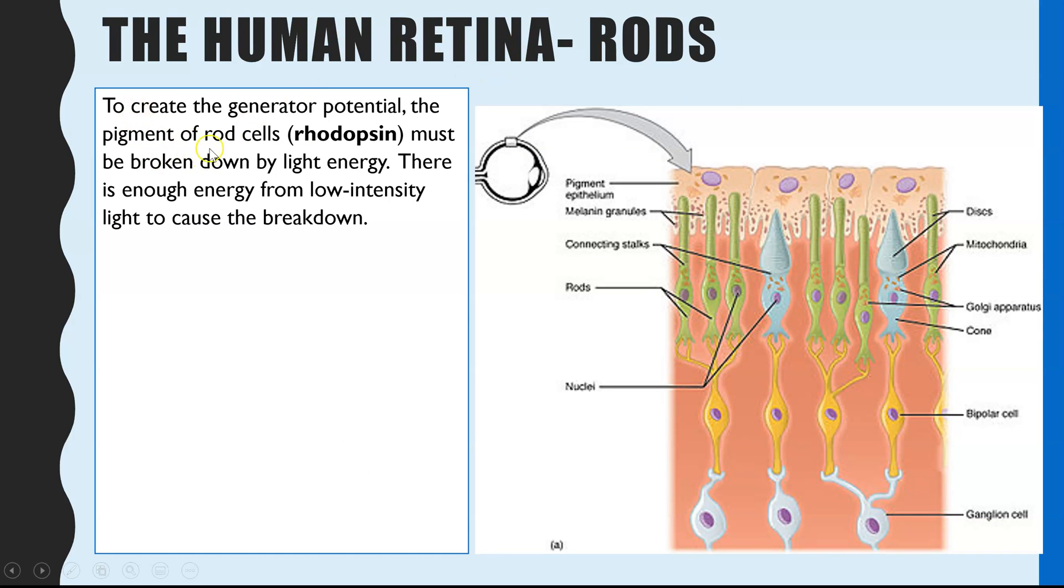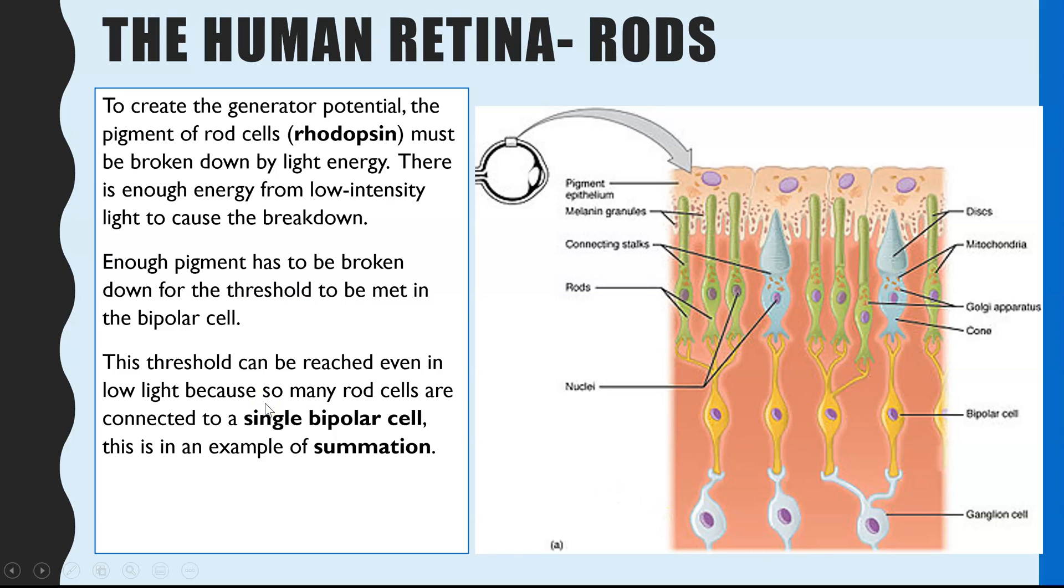So first of all, linking to what we said about receptors, they detect a stimulus. And if the stimulus is big enough, it will create a generator potential or an action potential. And in the case of rod cells, what they will be doing is absorbing the light intensity. And there is a protein pigment inside of these cells called rhodopsin. And if a big enough light intensity is absorbed, it will break down that pigment. And the breaking down of that pigment is what can then go on to trigger an action potential. So if enough pigment has been broken down, then for the threshold to be met in a bipolar cell, which are the cells that link the rod cells to the sensory neuron, then an action potential can occur.